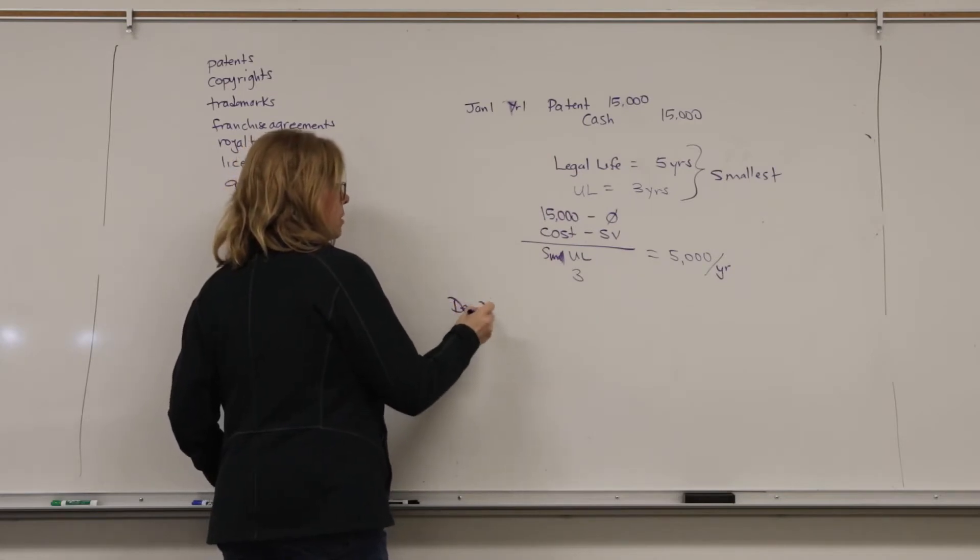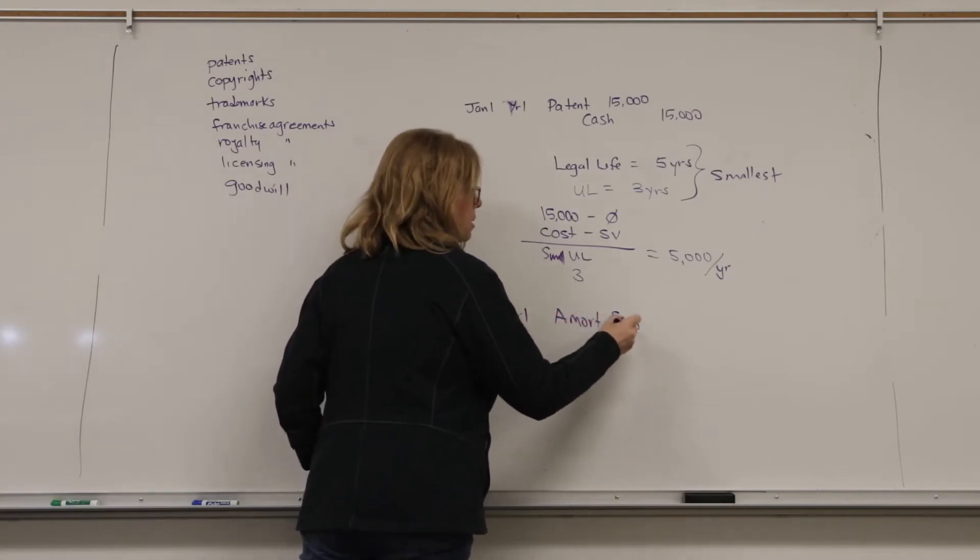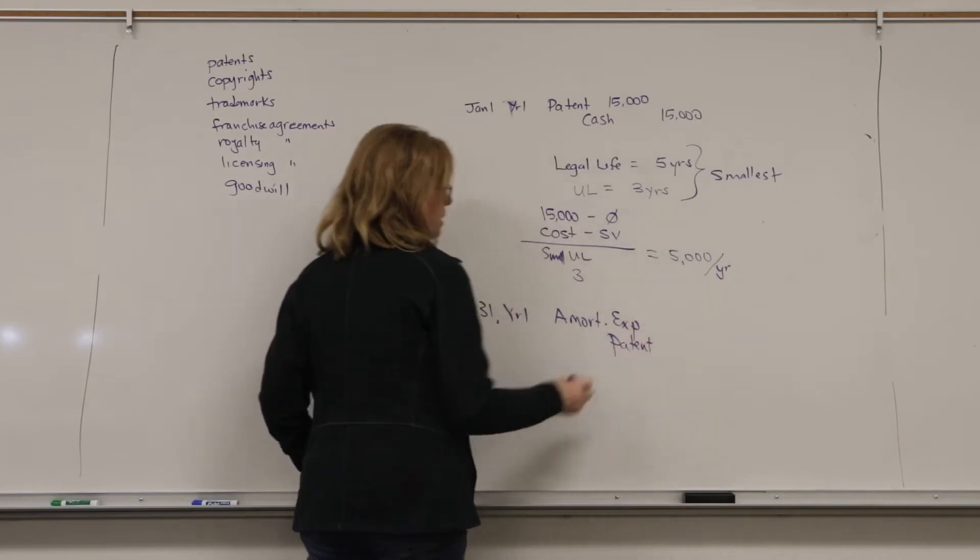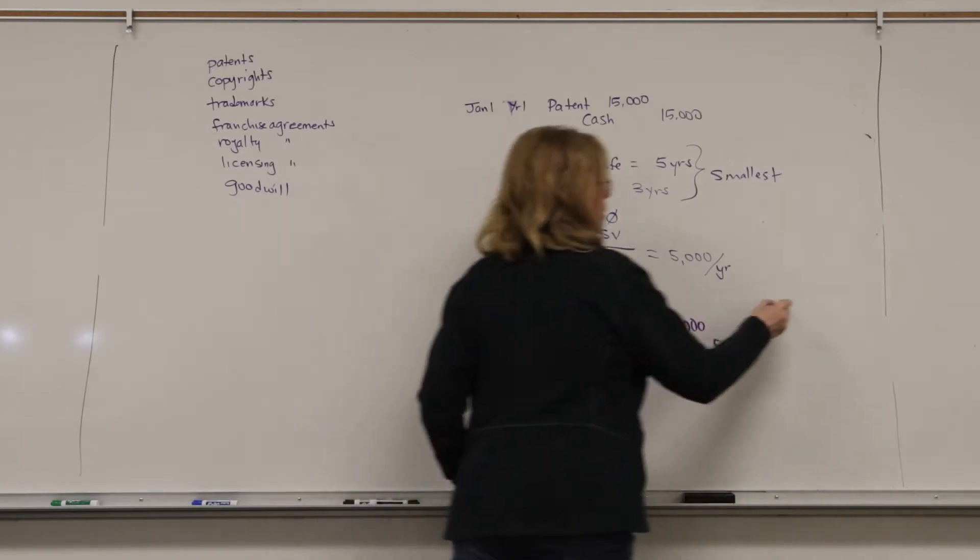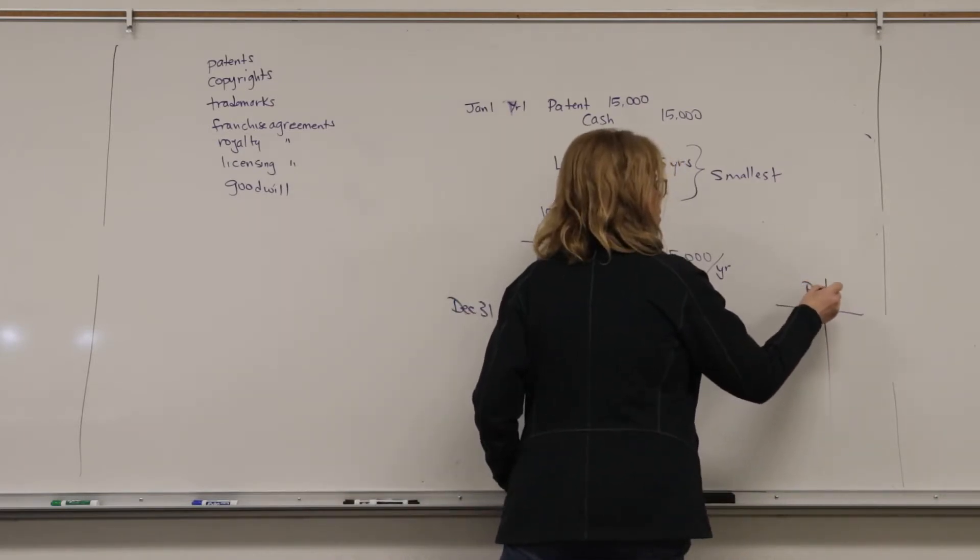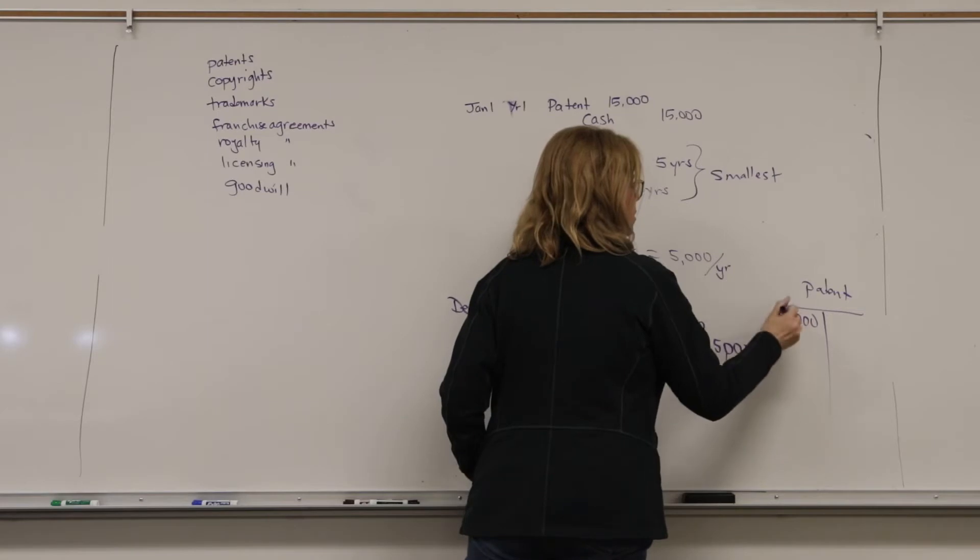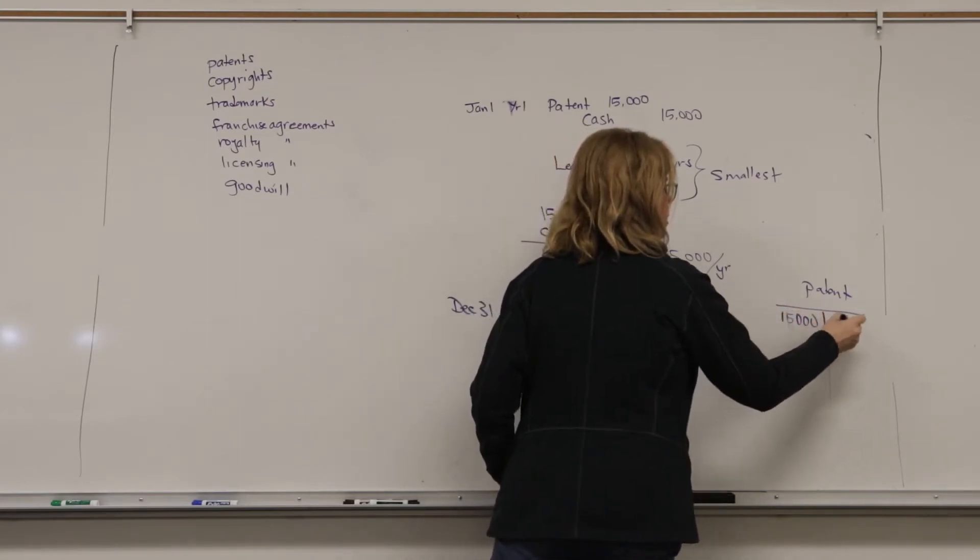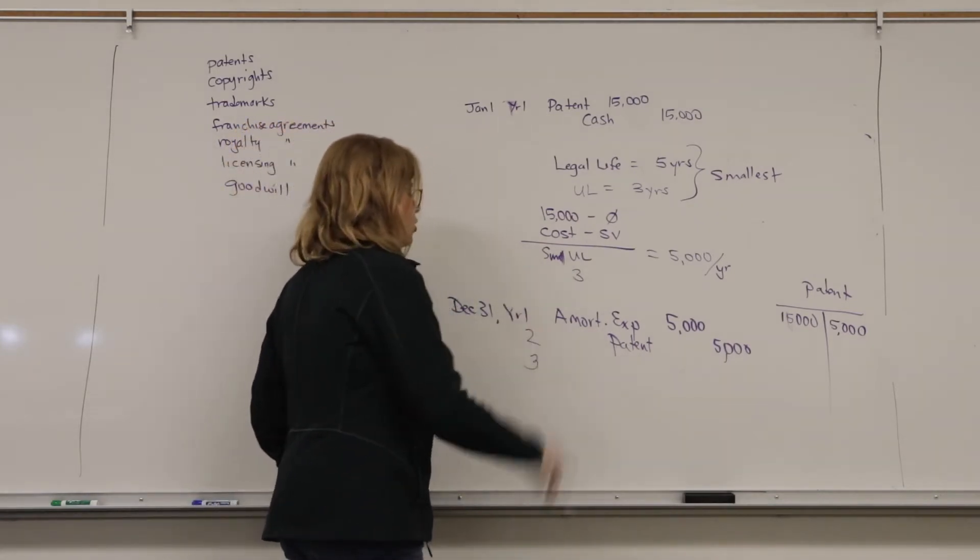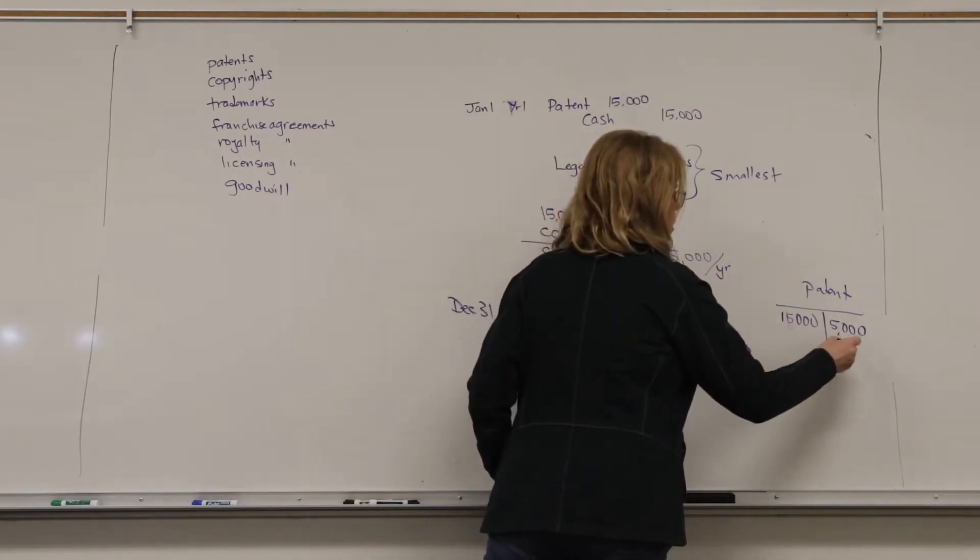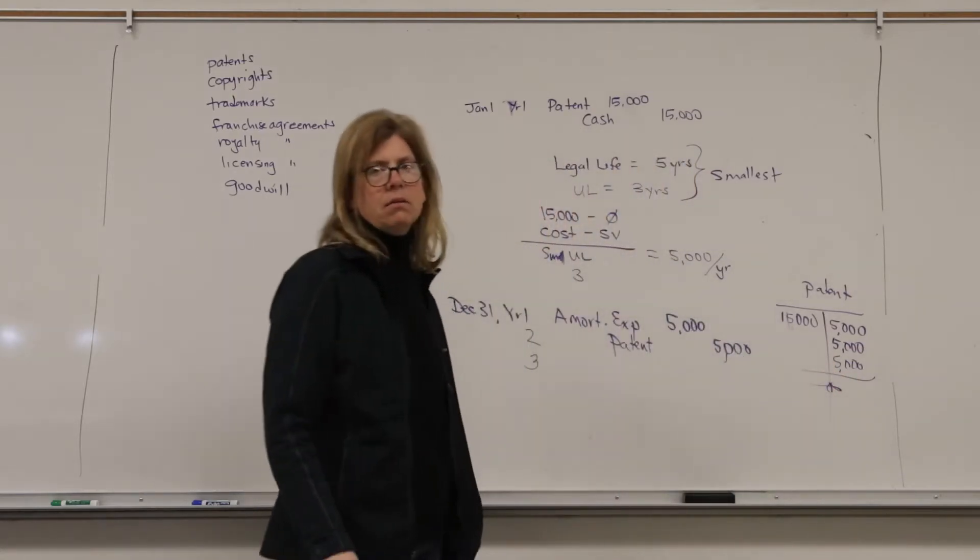So, December 31st, year one, I will debit amortization expense credit patent, because it is self-wasting, $5,000. So, here's a patent. Originally, I put this on the books at $15,000. And in the first year, I credited it $5,000. But I'm going to make this same entry for years one, two, and three. So, notice that at the end of the life, it is self-wasted, and it's gone away.